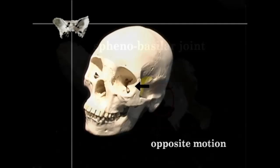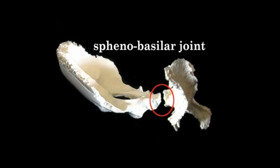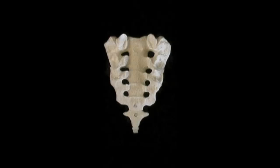The sphenoid and the occiput are joined at the sphenobasilar junction. It is because of this sacrum-occiput-sphenoid connection that clients will frequently feel their sinuses clear or experience some other sensation in their head while you are working on their sacrum.